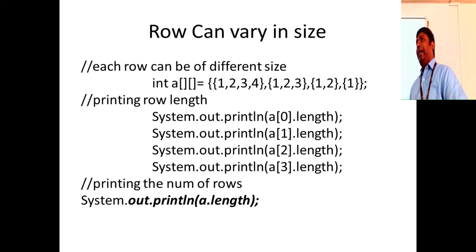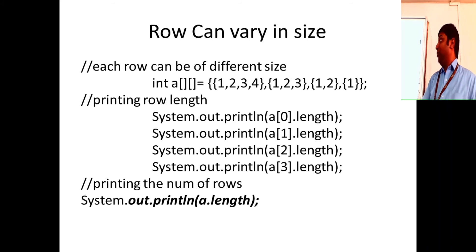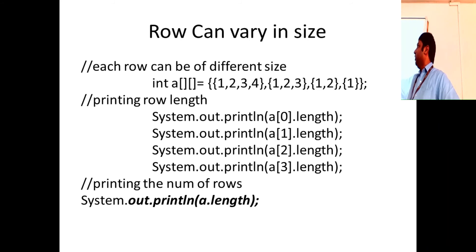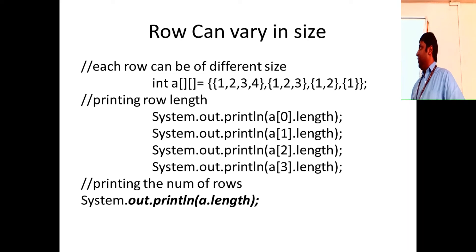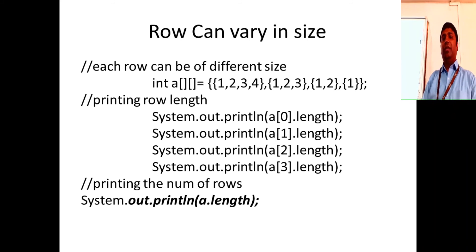Can you write code to find the sum of all elements inside this jagged array — first row: 1,2,3,4; second row: 1,2,3; third row: 1,2; fourth row: 1? Initialize a variable sum = 0. Use nested loops and do sum += a[i][j] for each element. a.length gives number of rows; a[i].length gives the length of each row independently.